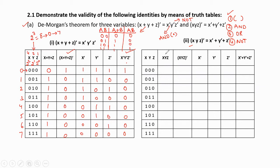Inside the bracket, the first priority is AND operation. xyz means the AND of three input variables. When all inputs are 1 the output is 1; if any one input is 0 the output is 0, so all remaining combinations are 0. Then we complement this AND result: (xyz)̄ — zeros become 1 and ones become 0. This completes the LHS part.